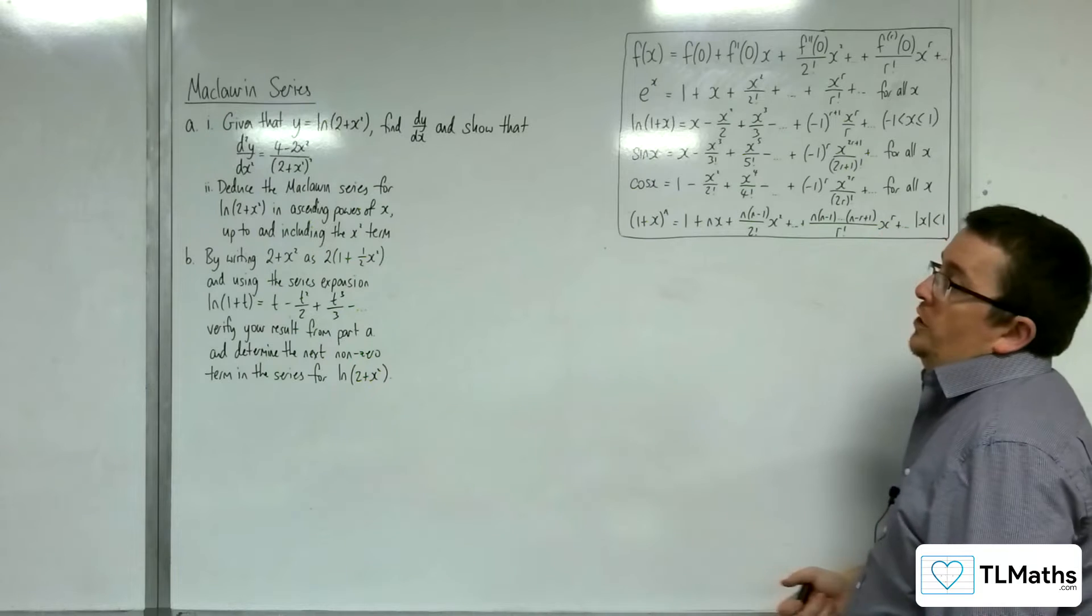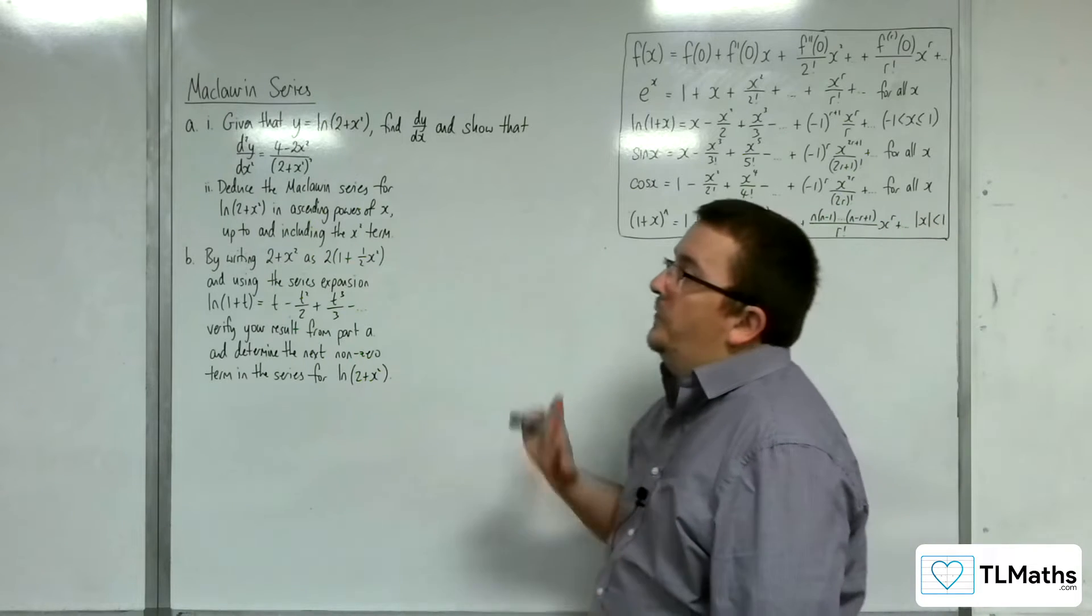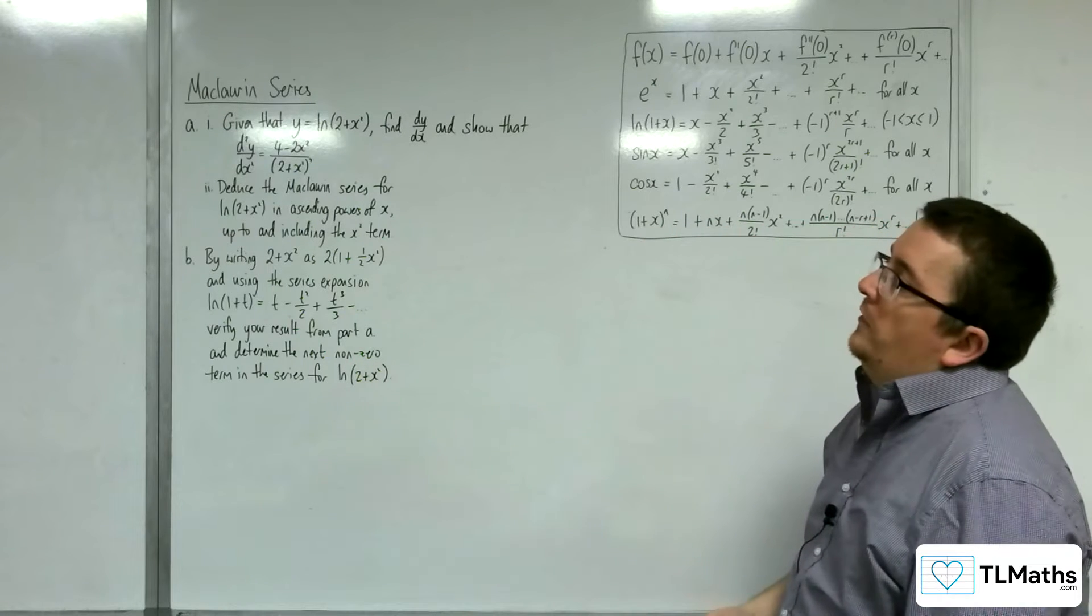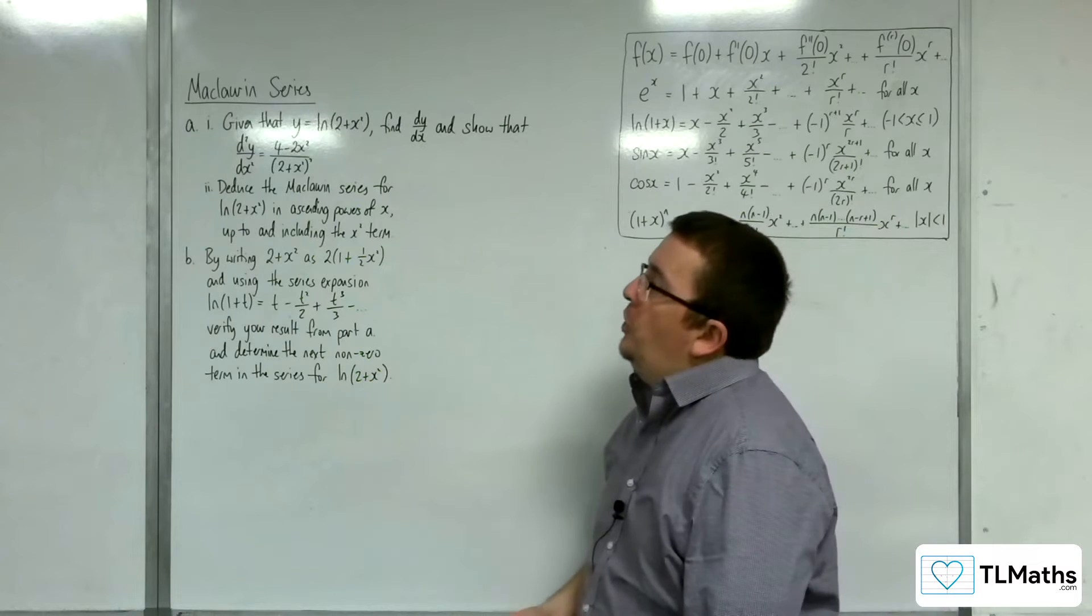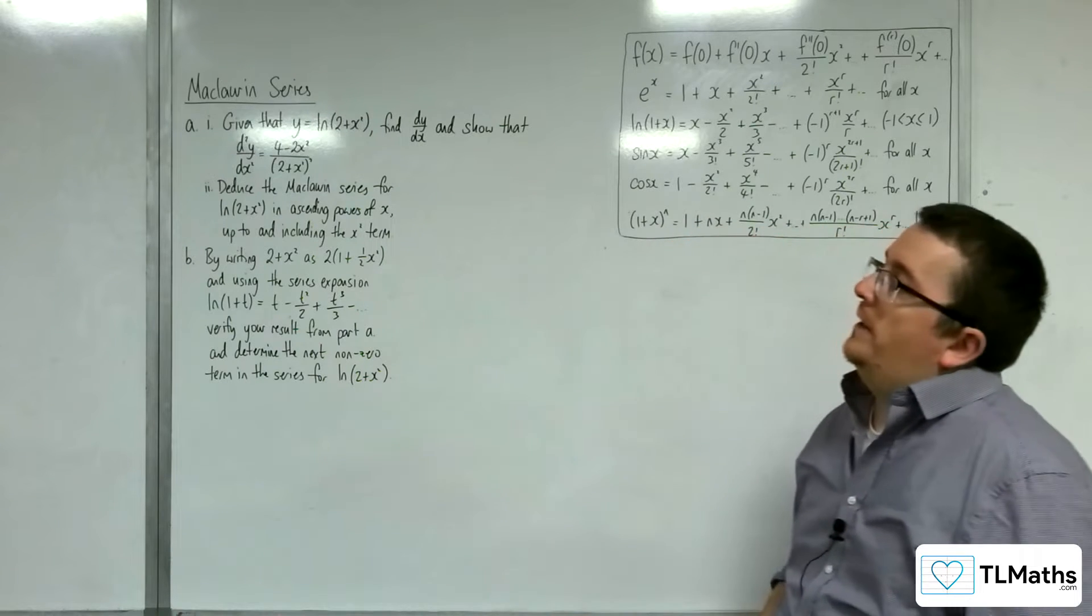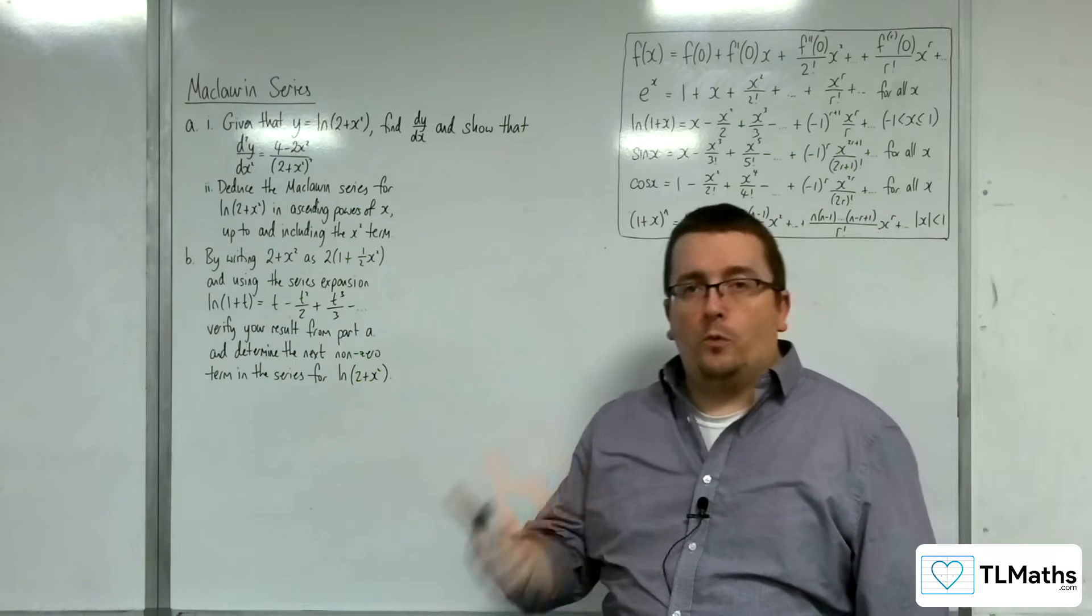Okay, so in this question we've got two parts. Part 1: given that y is equal to log of 2 plus x squared, find dy by dx, and show that d2y by dx squared is 4 take away 2x squared over 2 plus x squared squared.